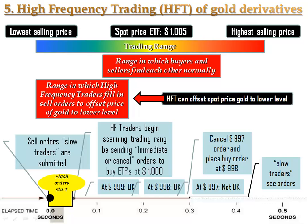Here we have a very interesting and sophisticated way to manipulate the price of gold. Let's say the spot price of an ETF on the market at a certain moment in time is $1,005. This means that traders at that moment are willing to pay $1,005 to buy an ETF and there are traders willing to sell an ETF for $1,005. But on the trading floor there will also be some traders whose offers are a little more offset from the ETF's spot price.